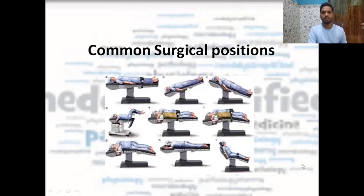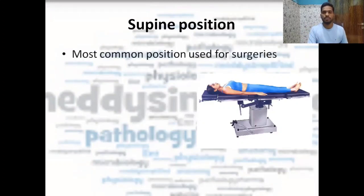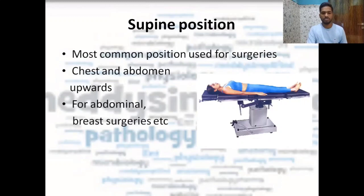The first is the supine position. The patient is on their back, with the chest facing upwards. It is the most common position used for surgeries. The chest and abdomen are facing upwards and it is usually used for abdominal surgeries and breast surgeries.